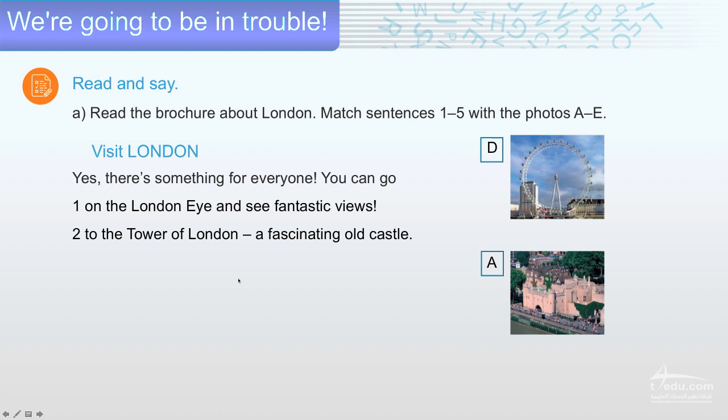Let's see. I want you to have these two pictures. One, of course, D. On the London Eye, where you can see fantastic views. This one. And number 2, to the Tower of London, a fascinating old castle. This one. This picture is from London, of course. It's a fascinating old castle here.